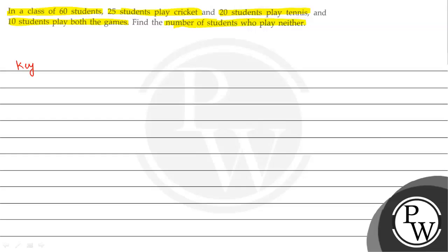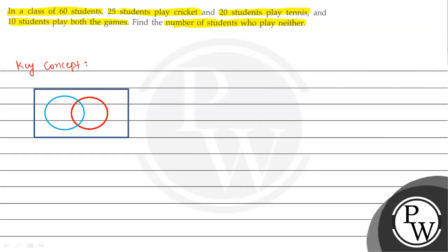The key concept to solve this question is the Venn diagram concept. This blue circle represents students who like to play cricket, and this red set represents students who play tennis.